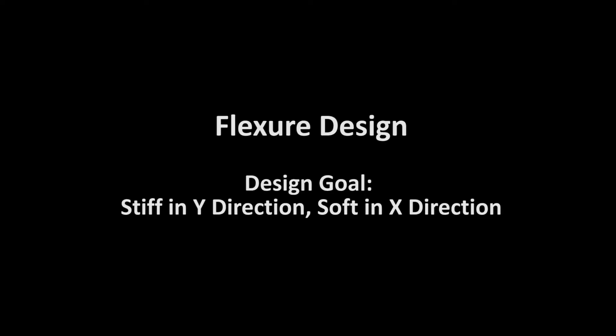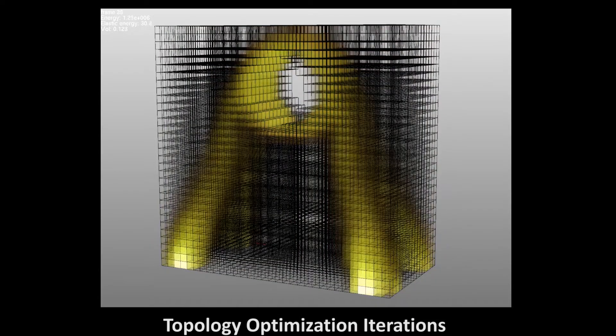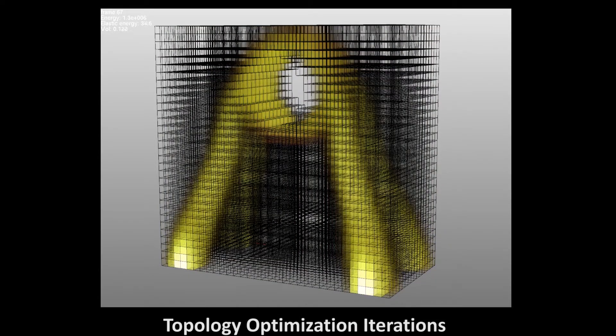We then demonstrate our algorithm in large-scale applications. We tested our algorithm by optimizing the structure of a flexure mount with two different target shapes to enable it to resist vertical loads while remaining compliant to horizontal loads.